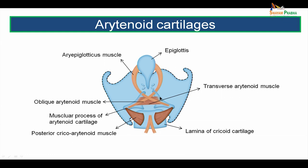Deep to or anterior to the oblique arytenoid muscle is the unpaired transverse arytenoid muscle which extends between the two arytenoid cartilages. The posterior cricoarytenoid muscle extends from the lamina of the cricoid cartilage going towards the laterally placed muscular process of the arytenoid cartilage.